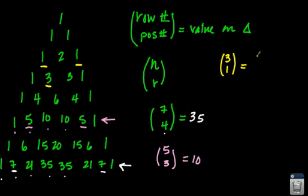So that means if I have row 3, one less than the row number is position 2. And that means that these are going to be equal. And in this case, they equal 3 because they'll always equal the row number.